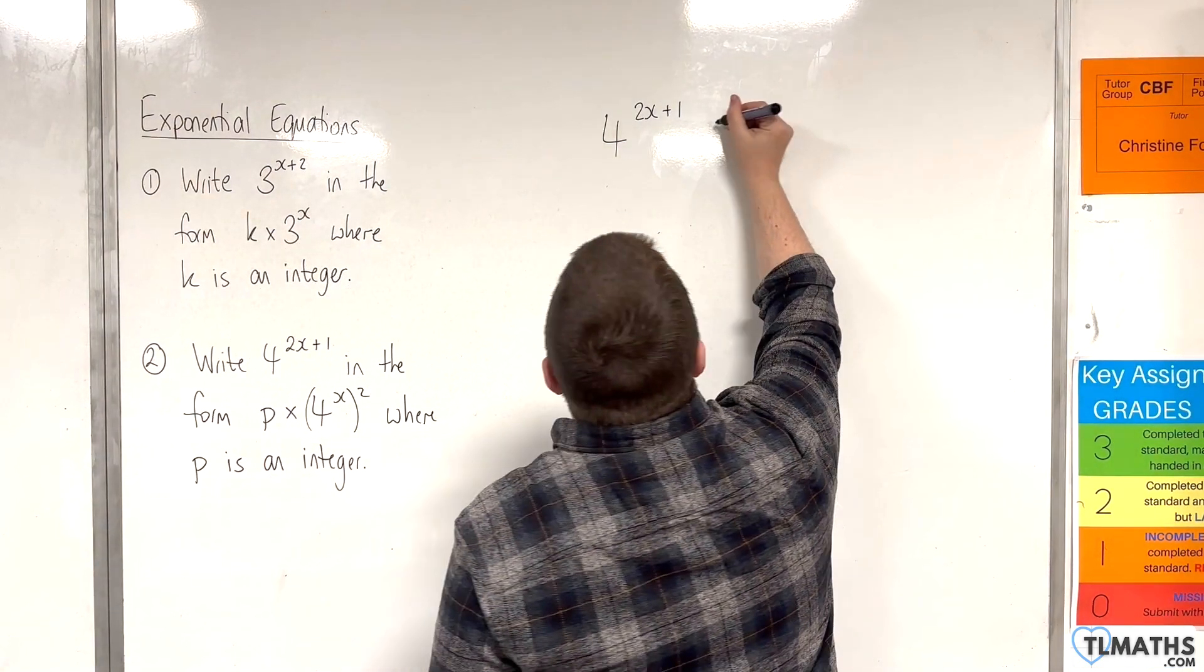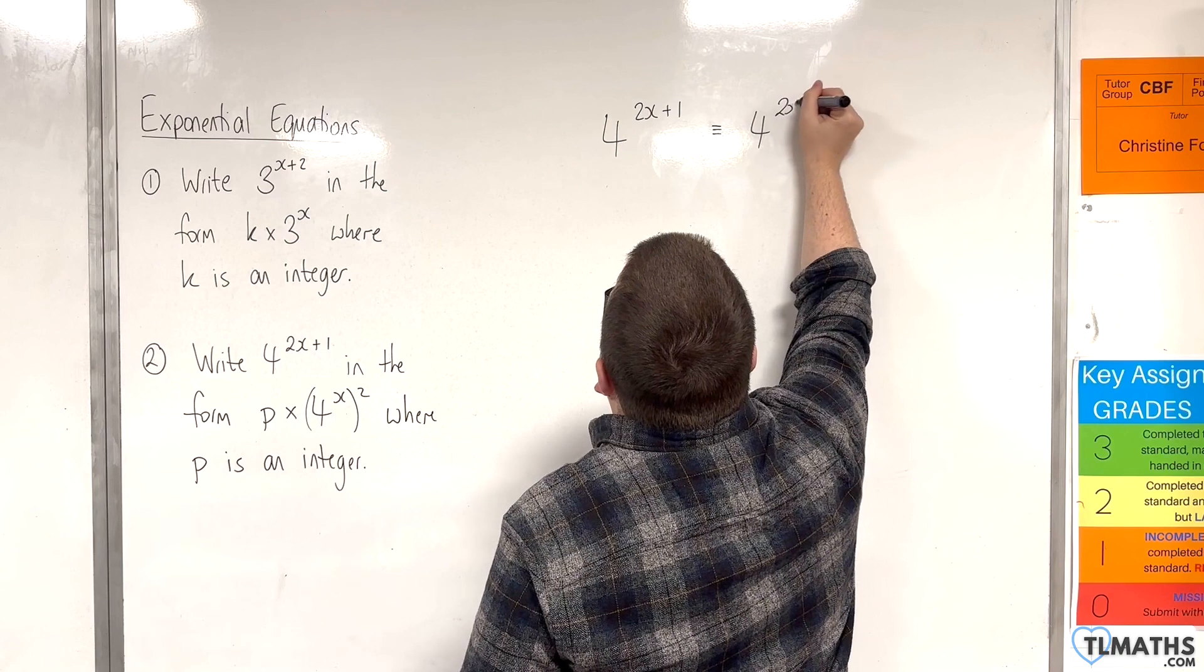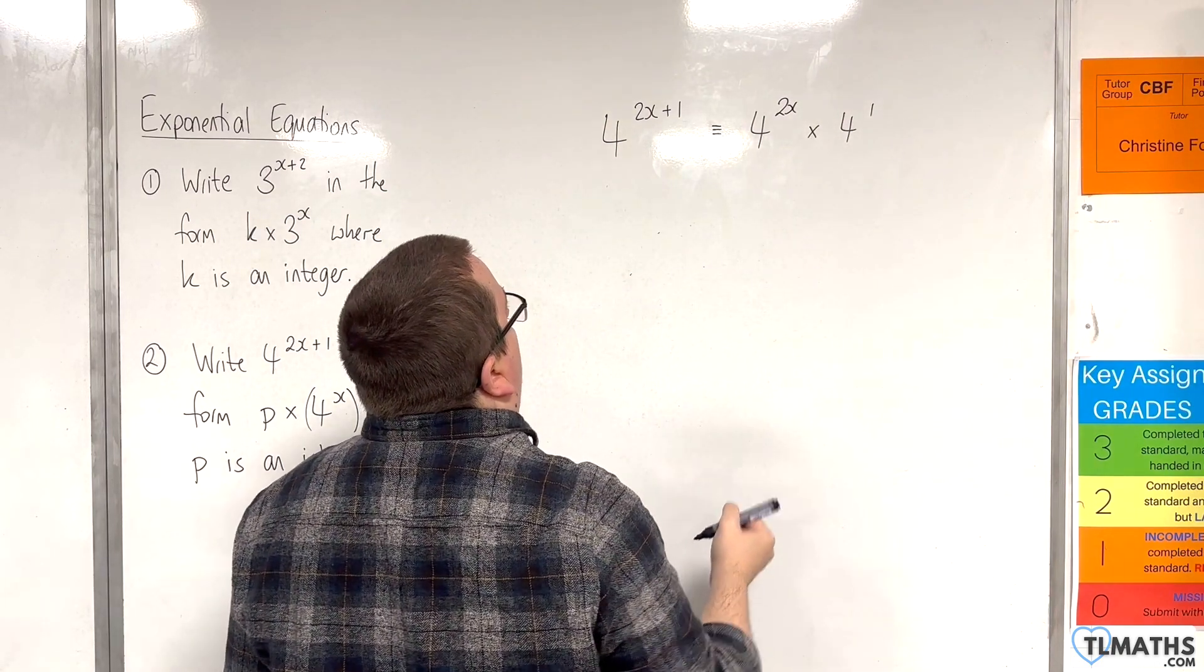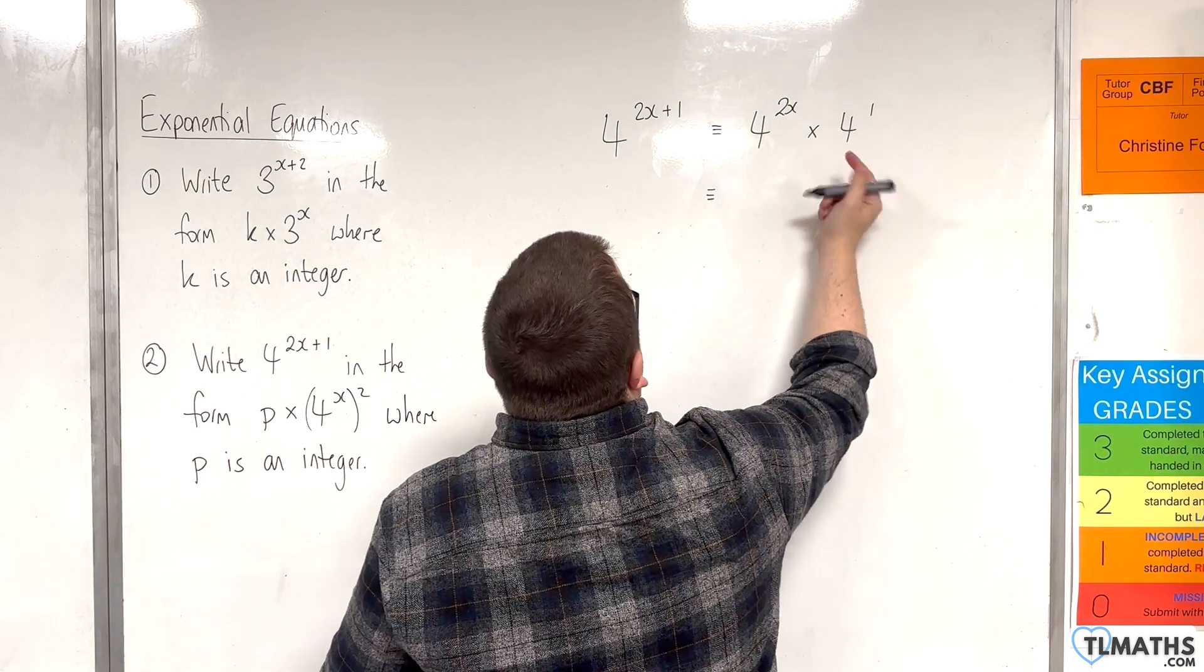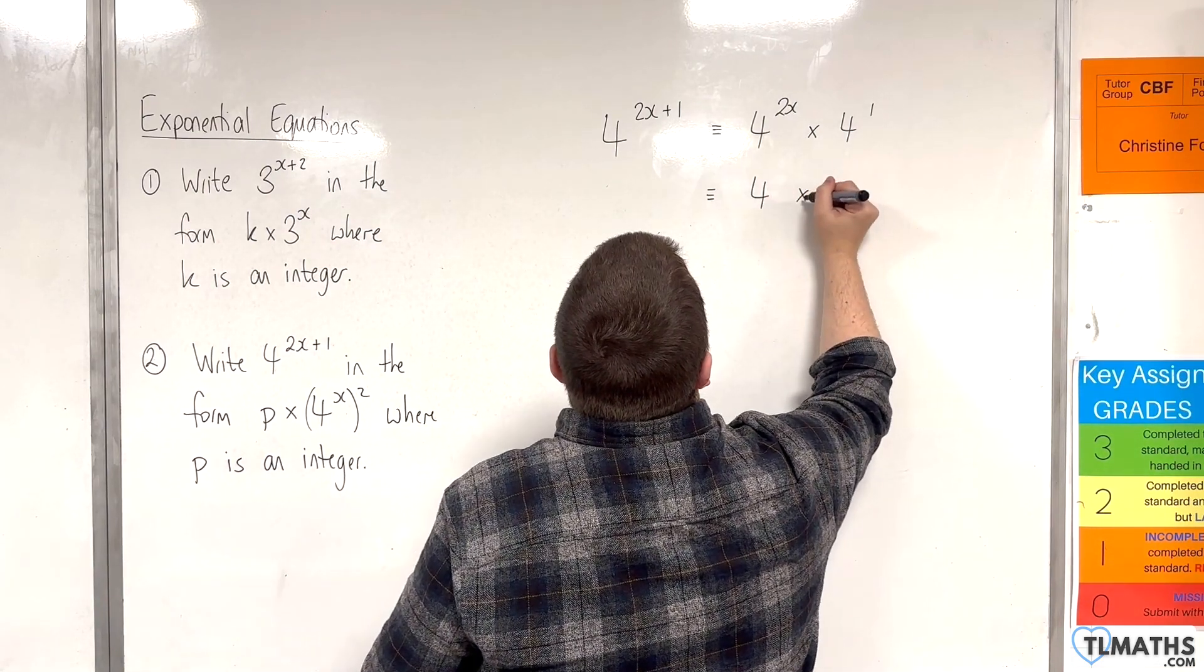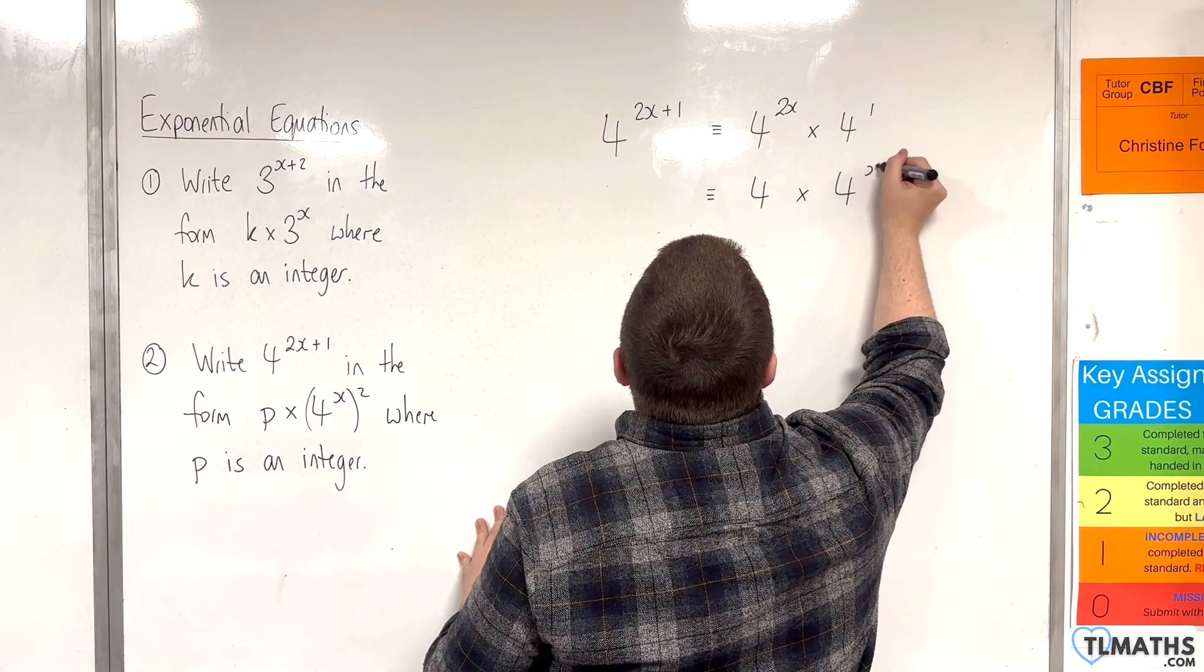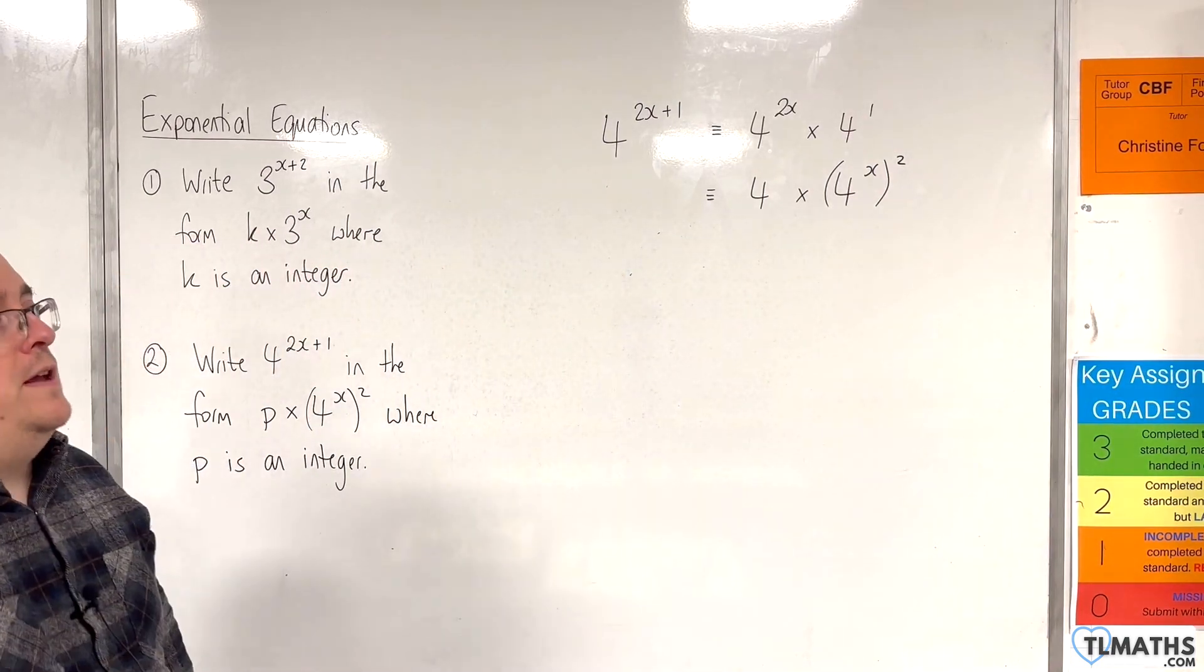So using our index laws, we can write this as 4 to the 2x times by 4 to the 1. Now if we reverse those, 4 to the 1 is of course 4, and 4 to the 2x we know is 4 to the x squared. We've seen that in the previous hidden quadratic videos already.